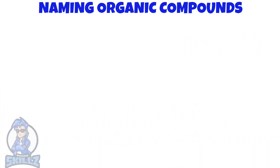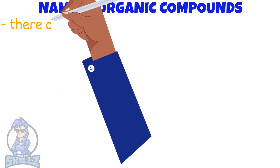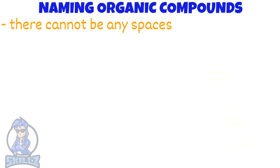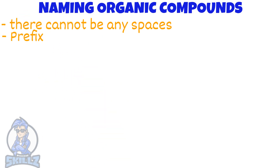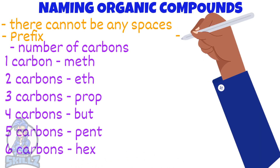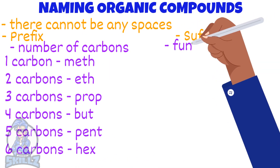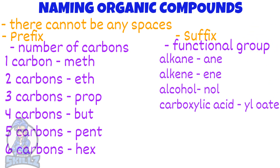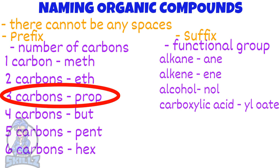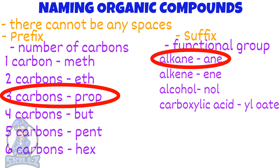Now let's see how we name organic compounds. When we name them, there are certain rules that we have to follow set by IUPAC. Firstly, there cannot be any spaces in the name. You can split the name into two parts: the prefix and suffix. The prefix tells you the number of carbons in the molecule, and the suffix tells you the functional group. So, if a molecule has 3 carbons and is an alkane, its name would be 'prop' meaning 3, and 'ane' showing alkane — propane.